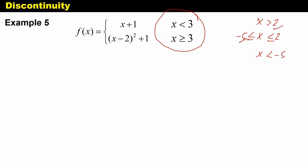To verify, we substitute x = 3 into both pieces of the function: (x + 1) and (x - 2)² + 1. If these two functions do not yield the same answer, then 3 is a point of discontinuity. Substituting: x + 1 = 3 + 1 = 4. For the other piece: (3 - 2)² + 1 = 1² + 1 = 2. Since 4 ≠ 2, x = 3 is confirmed as a point of discontinuity. Our point of discontinuity is x = 3, and its type is jump discontinuity.